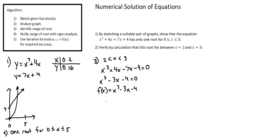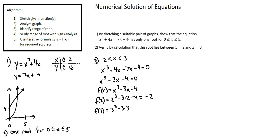Now I'm going to evaluate this function with two different inputs — the 2 and the 3 given in requirement 2. So f of 2 equals, with all x's becoming 2's: 2 to the power of 3 minus 3 times 2 minus 4. This equals 8 minus 6 minus 4, or negative 2. Let's do the same with 3: f of 3 equals, replacing all x's with 3's, 3 to the power of 3 minus 3 times 3 minus 4 equals 27 minus 9 minus 4, which is 14. And now we can evaluate our signs.